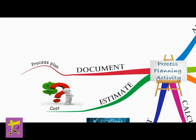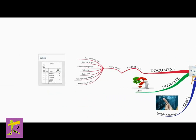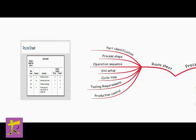The next activity in process planning is process planning documentation. Having selected the best alternatives and associated machines, the next step is to document clearly all the information in detail. The resulting process plan is generally documented as a job routing or operation sheet. The operation sheet is also called a route sheet, instruction sheet, traveler, or planner. The route sheet lists the production operations and associated machine tools for each component and sub-assembly of the product.